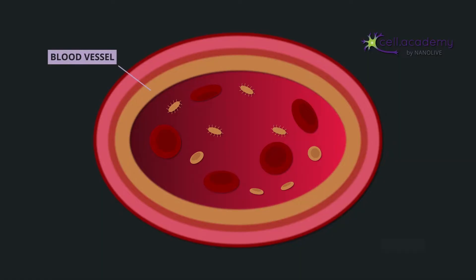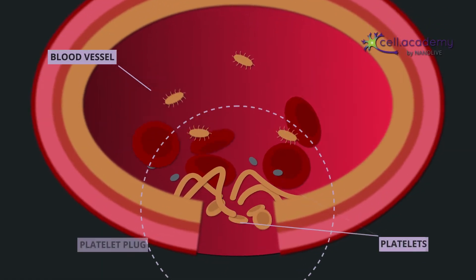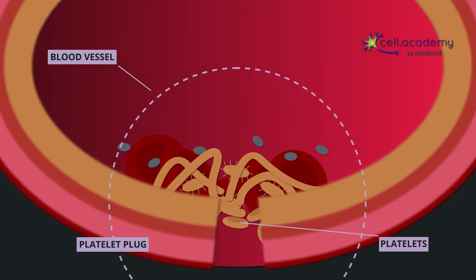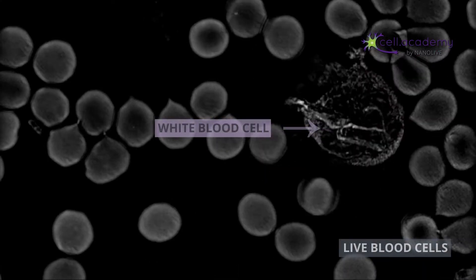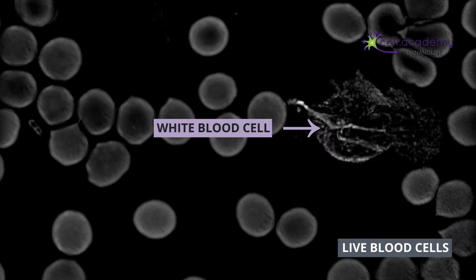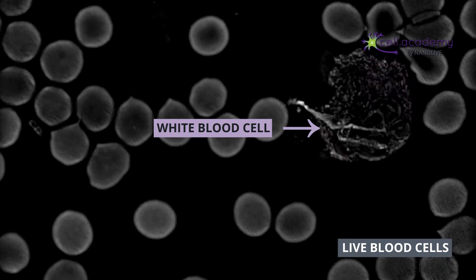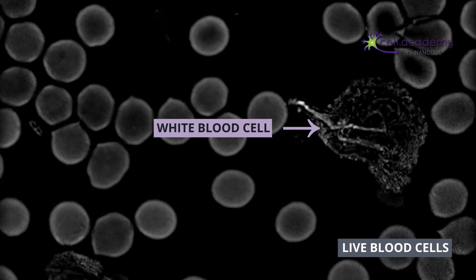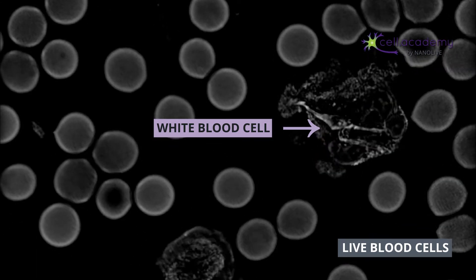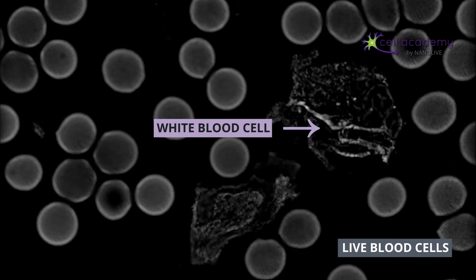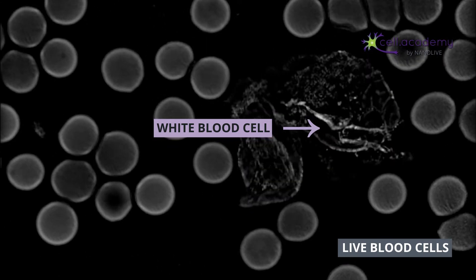Platelets respond to blood vessel injury and help stop bleeding by creating a platelet plug. White blood cells, like the macrophages we showed in our previous video on the immune system, are mainly involved in immune responses.